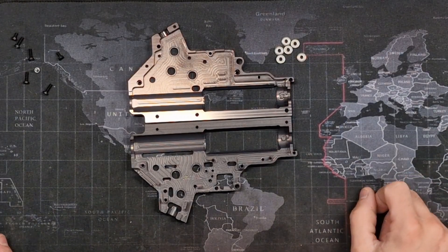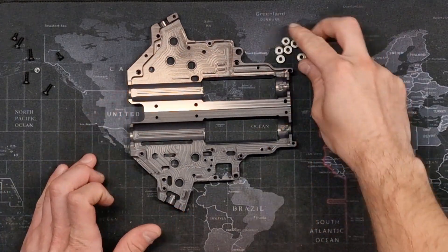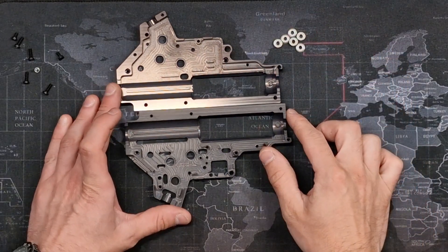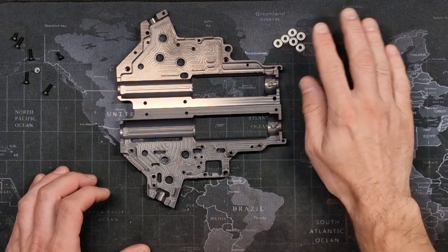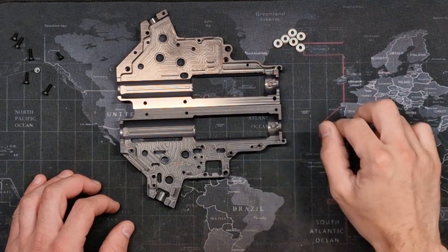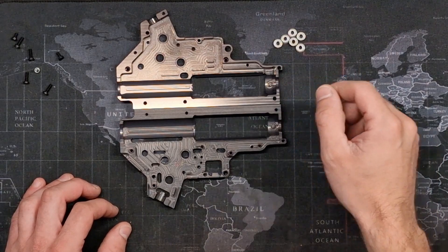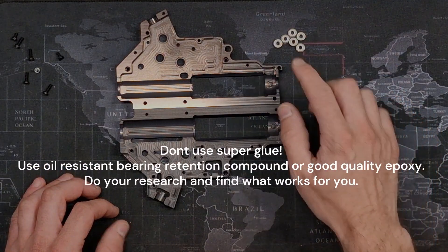In today's episode of tech tips, we're going over why you should always, in my personal opinion, lock your bushings and bearings into the gearbox with a bearing retaining compound or good quality Loctite. Some people might disagree, but I wouldn't recommend using super glue.